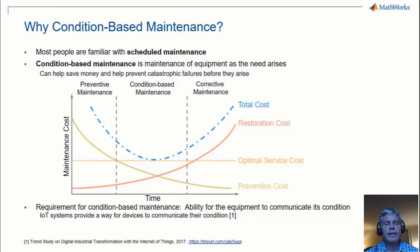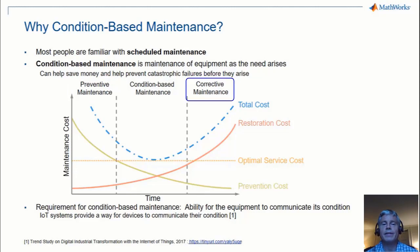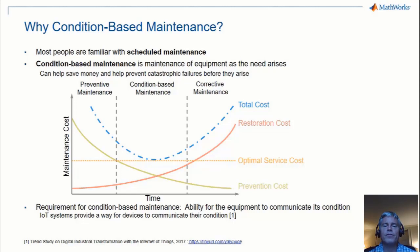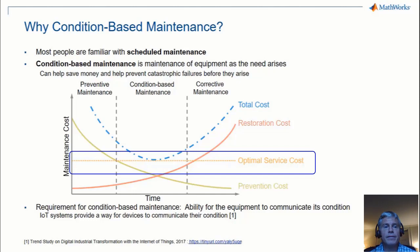It demonstrates how to use ThingSpeak and MATLAB to develop a condition-based maintenance system of an industrial duct fan. The most typical maintenance schedule is regular preventive maintenance following a maintenance manual, supplemented by corrective maintenance when the machine fails. Present technology allows a smarter and more cost-effective maintenance schedule. With condition-based maintenance, you continuously monitor the condition of the machine remotely and predict when the machine needs maintenance. Then you only perform service when it is needed. The result is fewer failures and lower maintenance cost.